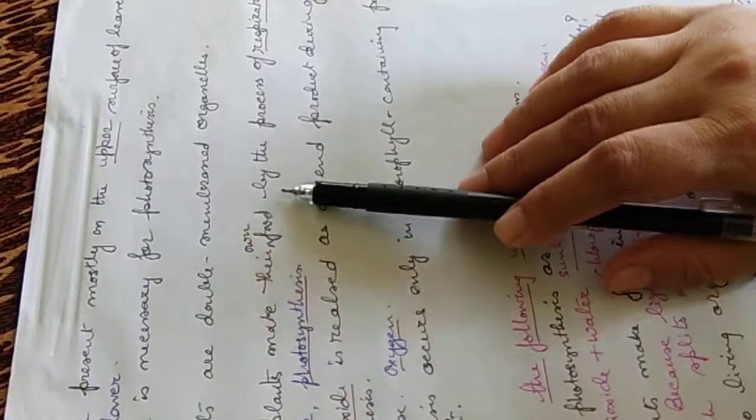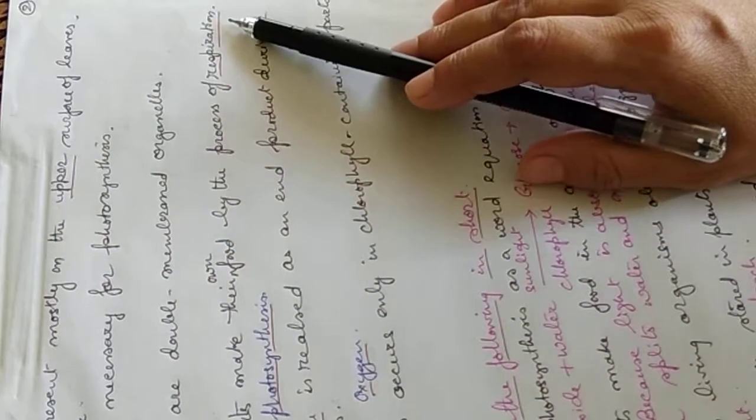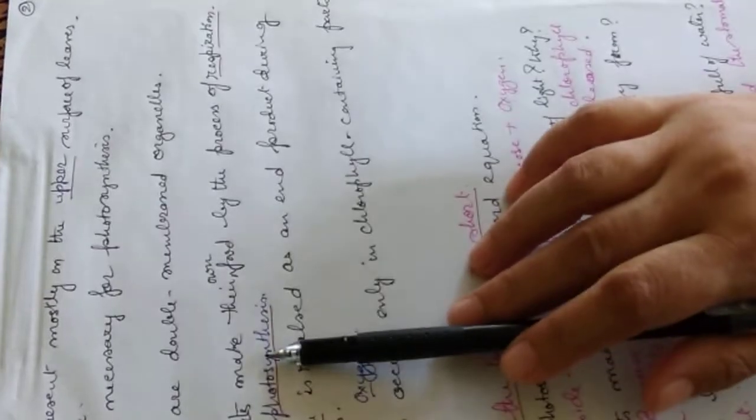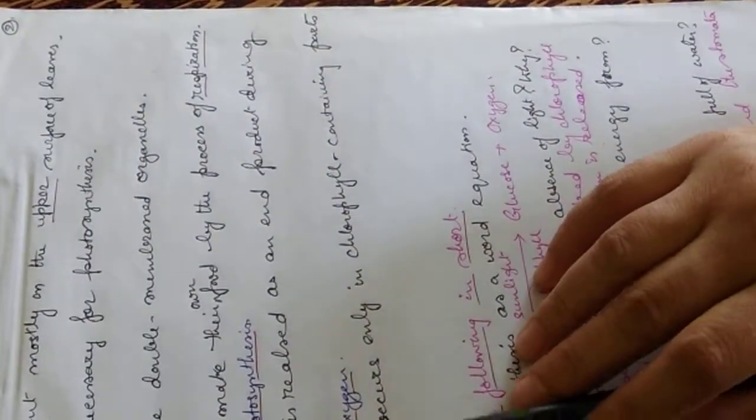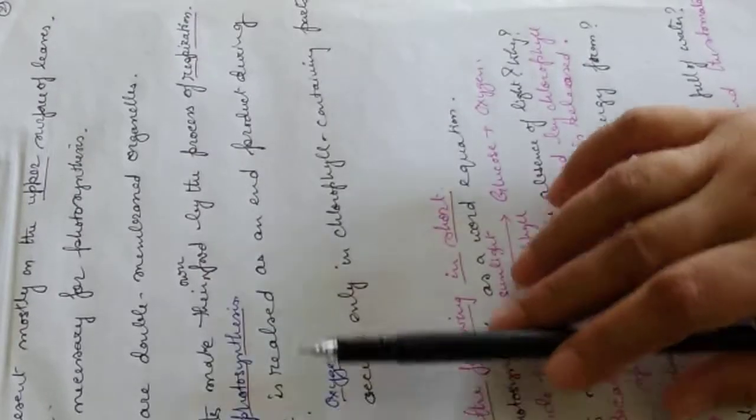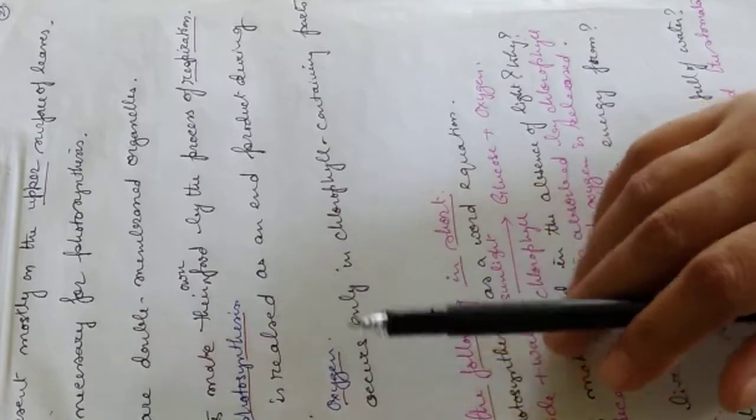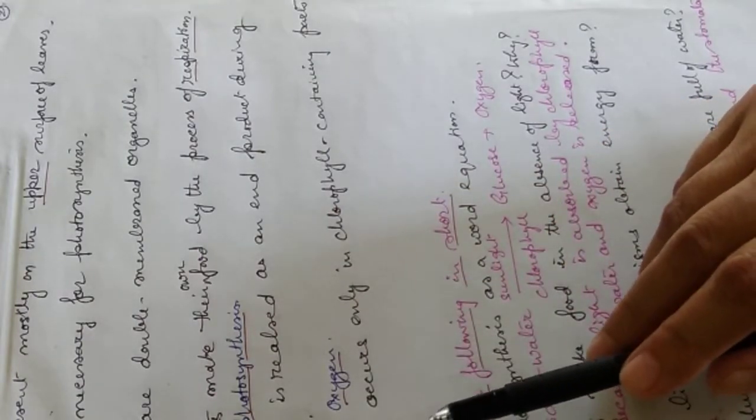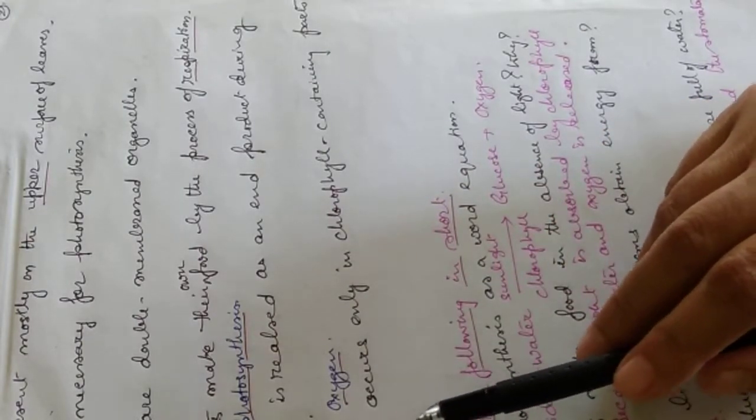Green plants make their own food by the process of respiration. That's false. Not respiration, it's the process of photosynthesis. Then carbon dioxide is released as an end product during photosynthesis. Carbon dioxide is used during photosynthesis and the end product that comes out is oxygen. So the statement is false.